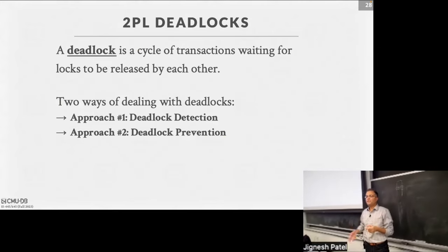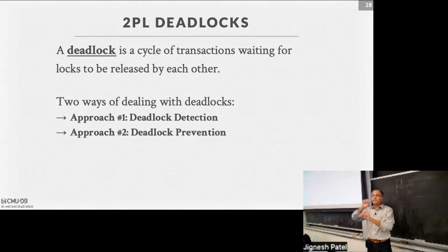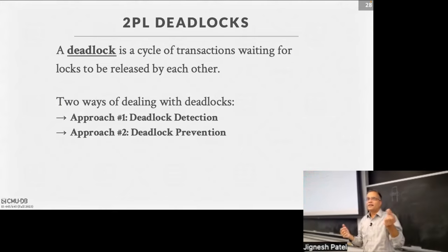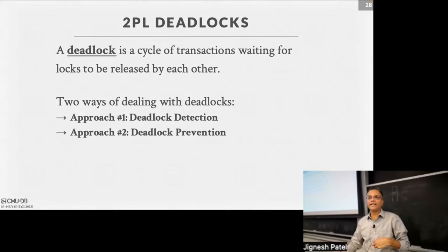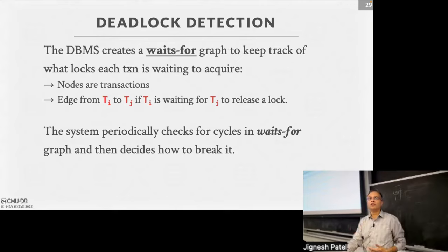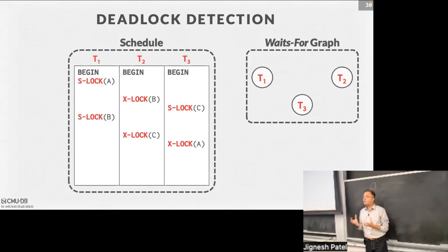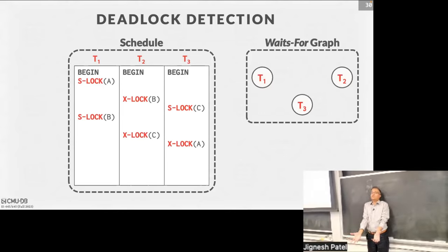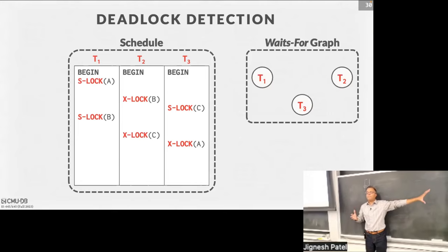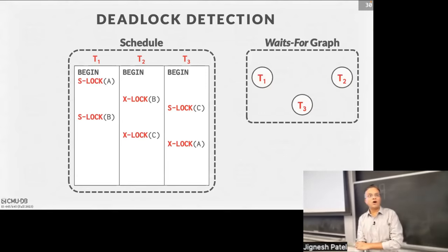There are two ways to deal with deadlocks. First is deadlock detection: periodically run a background thread to go through the lock manager and look for deadlock cycles, then kill one of the transactions to break the cycle. Second is deadlock prevention, which is pessimistic — stop transactions as early as possible. We create wait-for graphs, which look like dependence graphs but are for deadlocks. They are constructed from the lock manager state — not from read/write relationships as with dependence graphs.